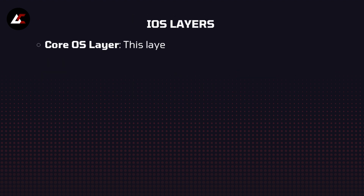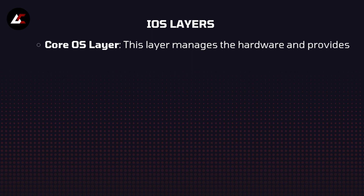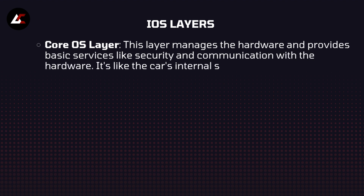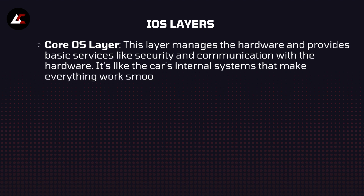Within the iOS layers, there are four types. The first is the Core OS layer. This layer manages the hardware and provides basic services like security and communication with the hardware. It is like the car's internal system that makes everything work smoothly.